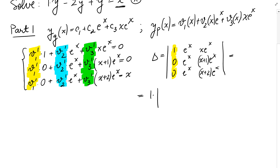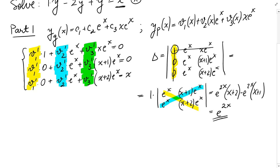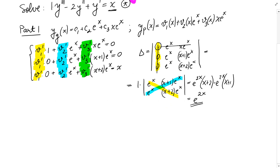Expanding by the first column, we take the 1 entry and cross out its row and column, leaving the 2×2 determinant with entries e^x, e^x, (x+1)e^x, and (x+2)e^x. Computing that gives e^(2x)(x+2) minus e^(2x)(x+1), which equals e^(2x). So delta equals e^(2x).